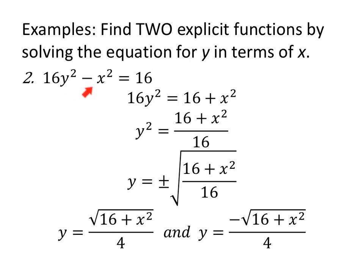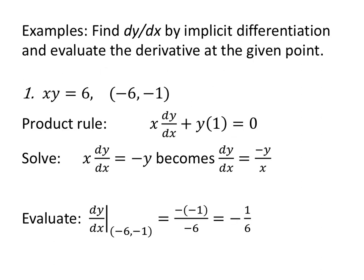For 16y squared minus x squared equals 16, solving for y: add x squared to both sides, divide by 16 to get y squared alone, then take the square root with plus or minus. That gives y equals the square root of 16 plus x squared all over 4, and y equals negative square root of 16 plus x squared all over 4. We'd need to find two separate derivatives — so let's use implicit differentiation instead.